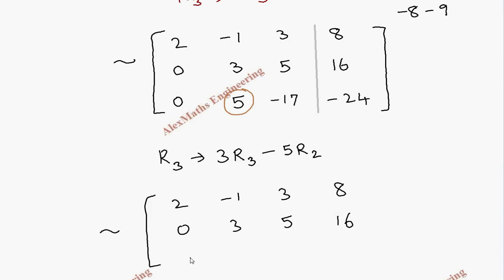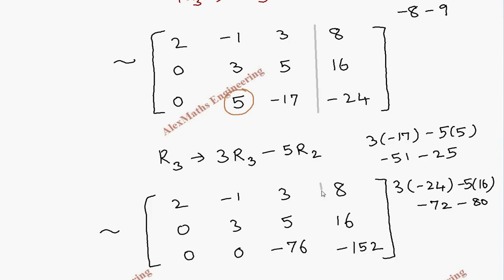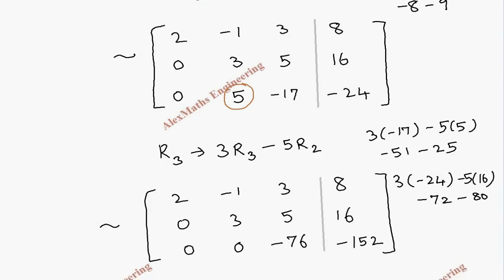Since both are zero in the first position it is 0. Then: 15 minus 5 times 3 is 15, so this is also 0. Then 3 times minus 17 minus 5 times 5 gives minus 51 minus 25, totaling minus 76. And here 3 times minus 24 minus 5 times 16 gives minus 72 minus 80, totaling minus 152. So we have completed the matrix and converted it into an upper triangular matrix where elements are present only in the upper triangle.